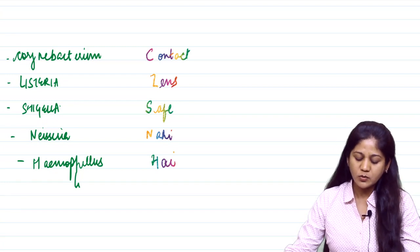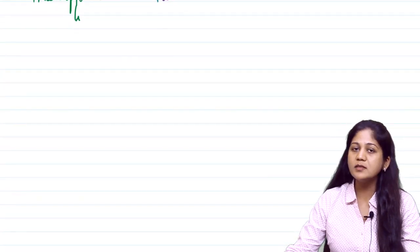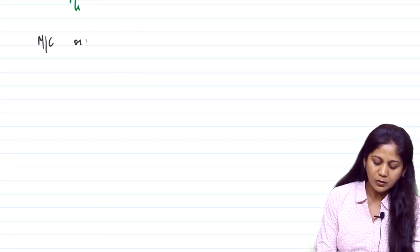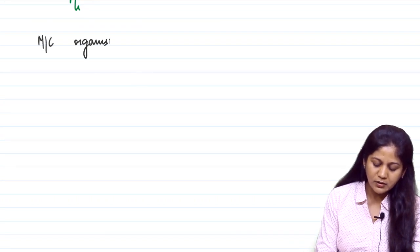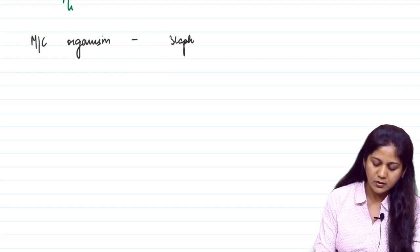The next question is what is the most common organism to cause corneal ulcer? The most common organism worldwide is Staph aureus.